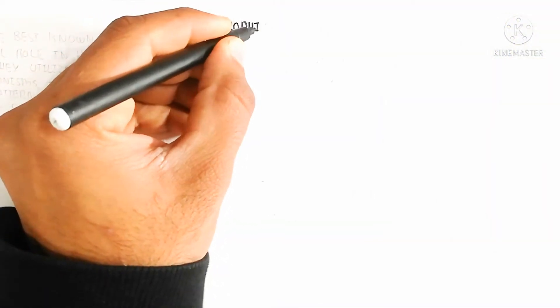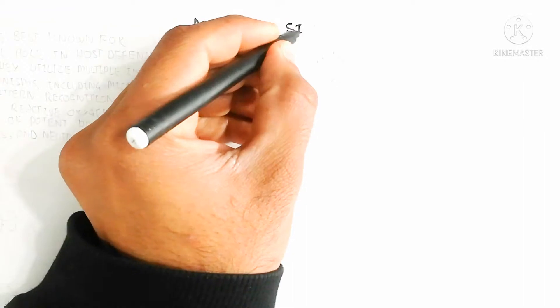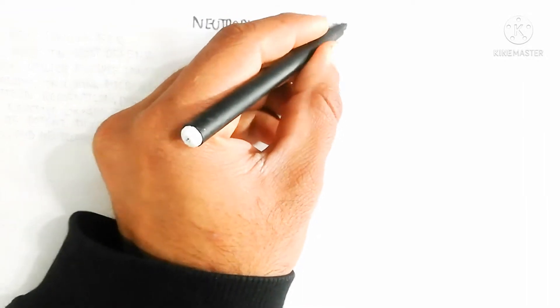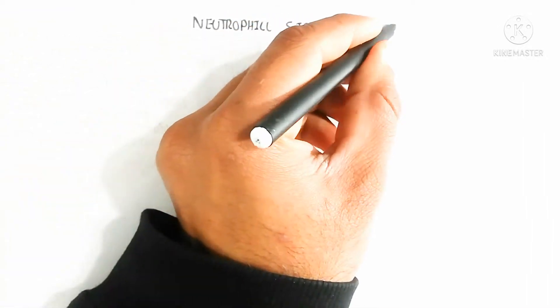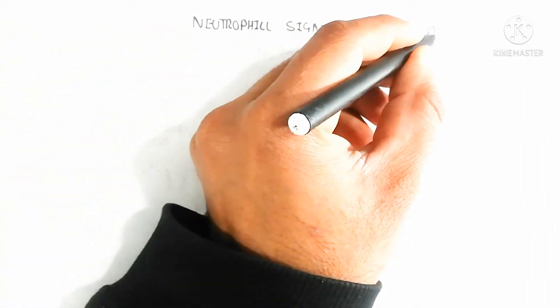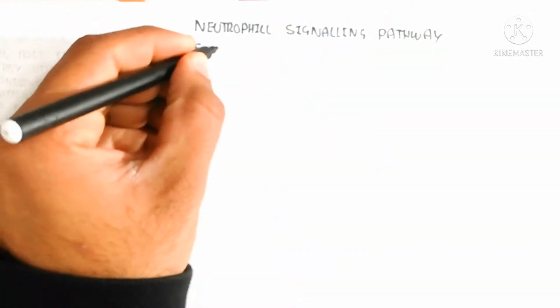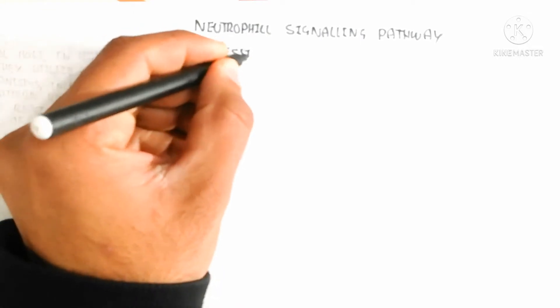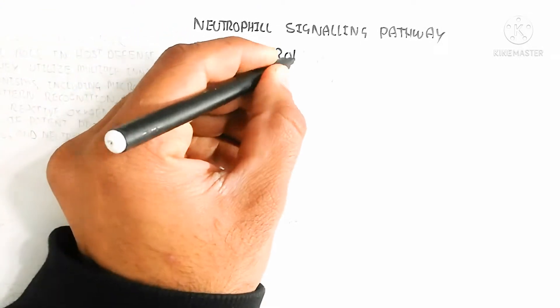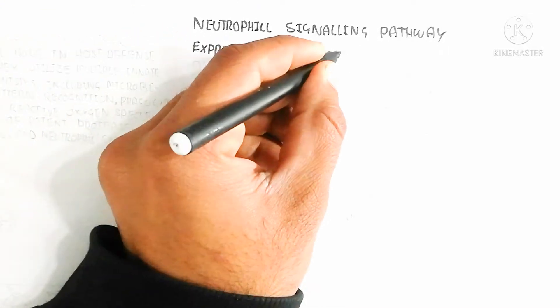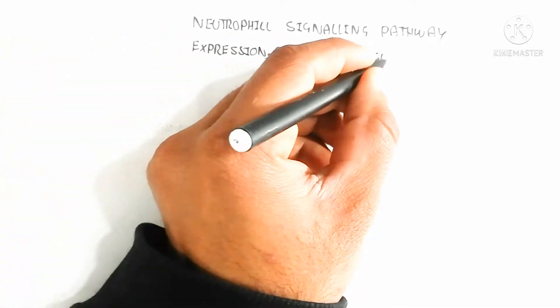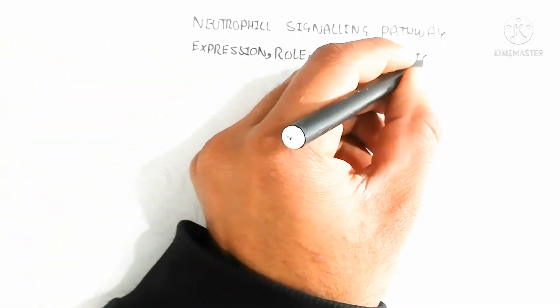Hello, in this video we will discuss about the neutrophil — the neutrophilic signaling pathway — which covers the expression, role, and regulation of neutrophil through Fc gamma receptors.